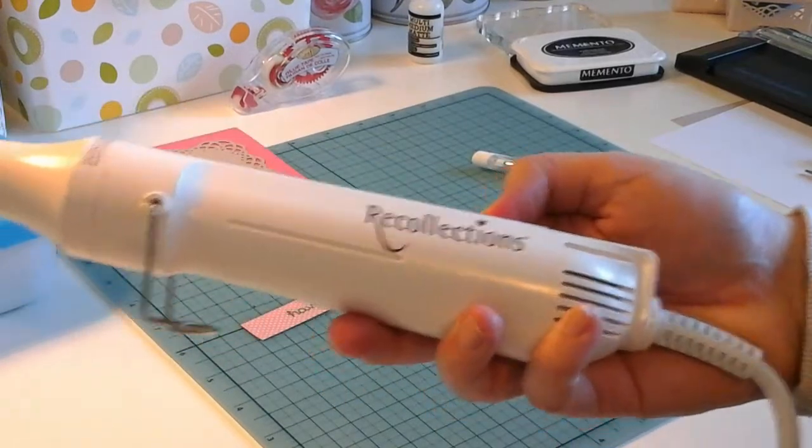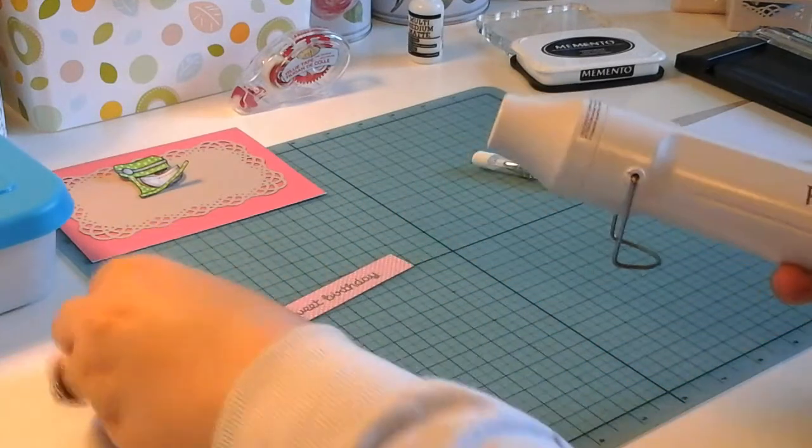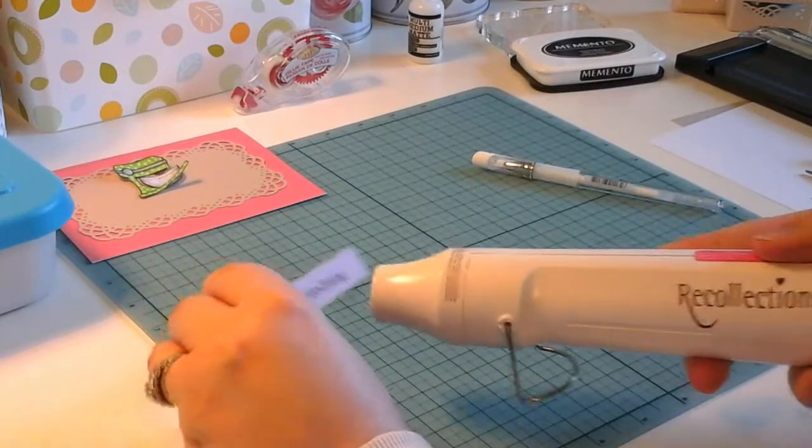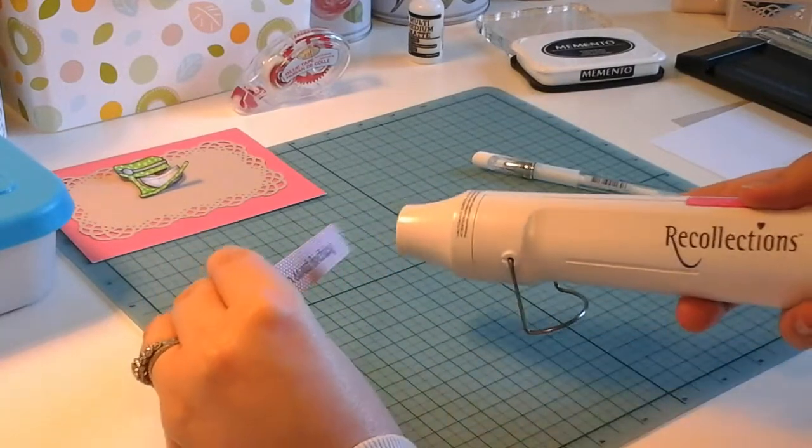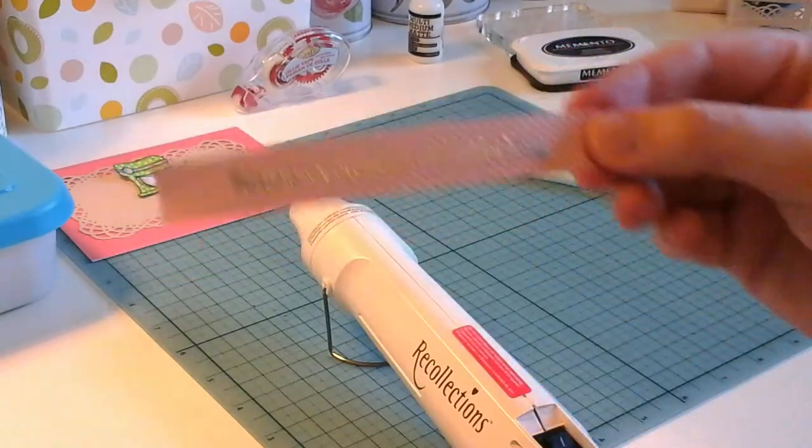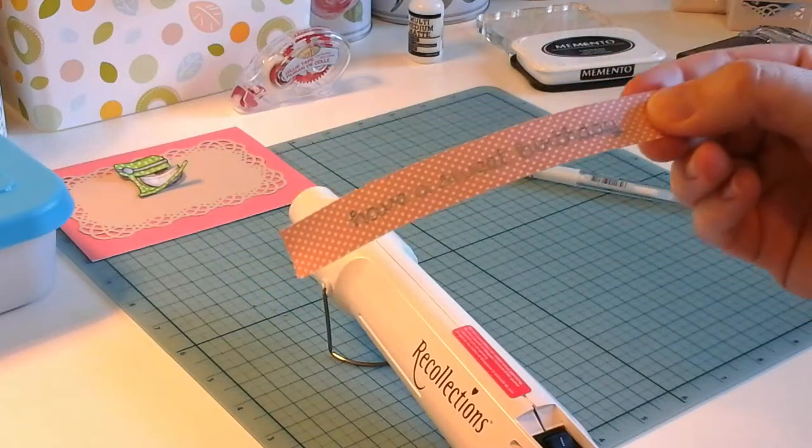I'm going to go ahead with my Recollections heat embossing tool. I'm just going to turn that on, let it heat up, and it's nice and hot. I'm going to heat set that. I hope you can see that on camera. It's got that really pretty silver sheen to it.